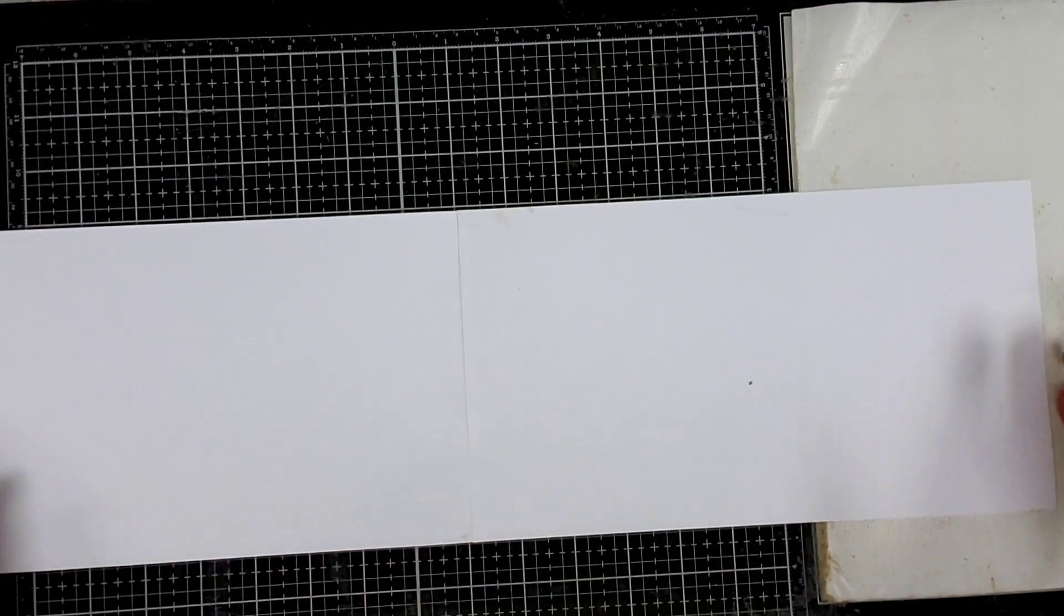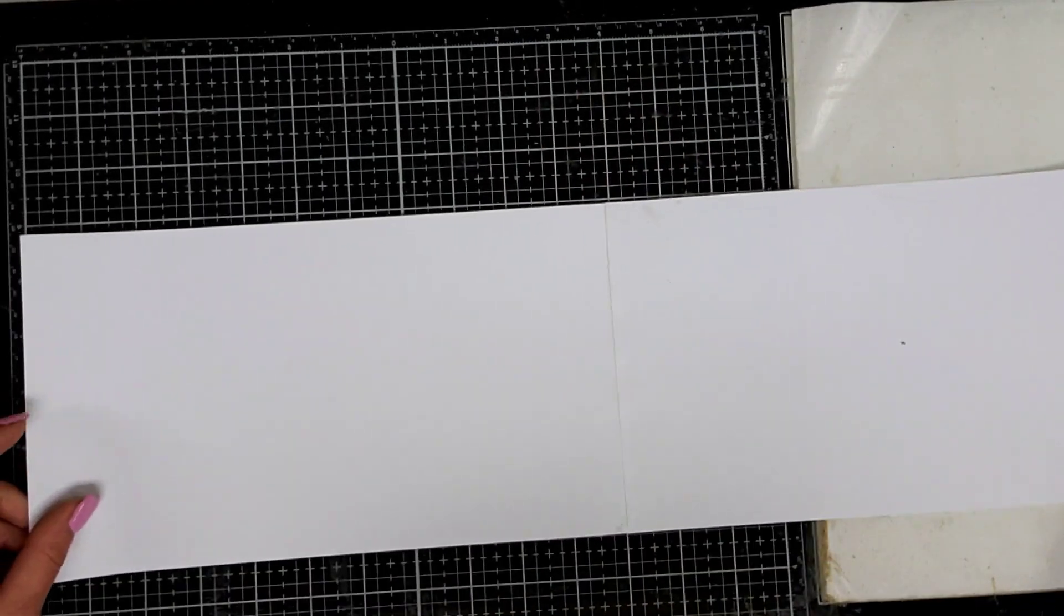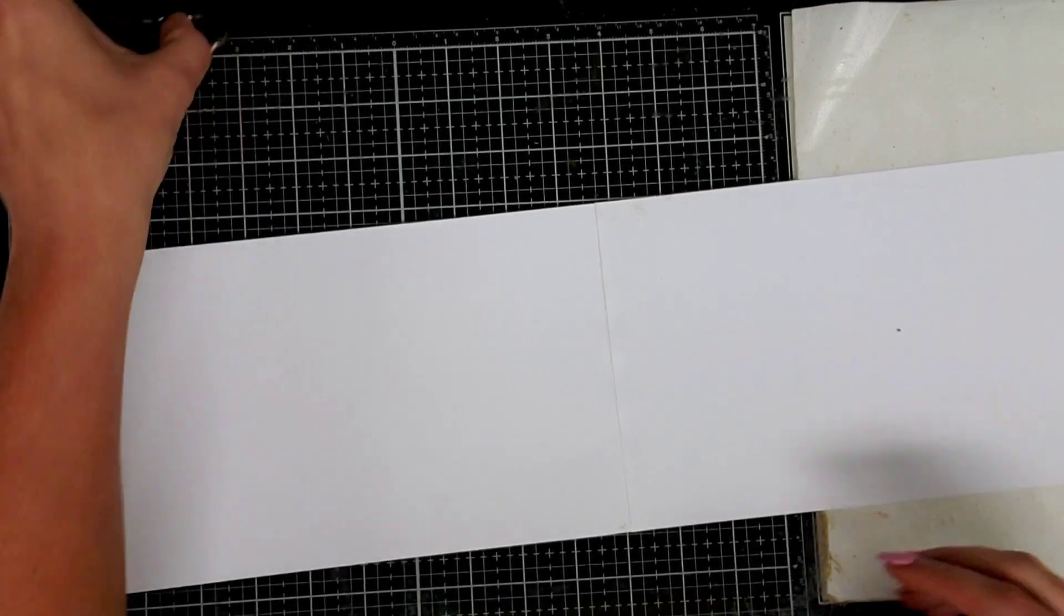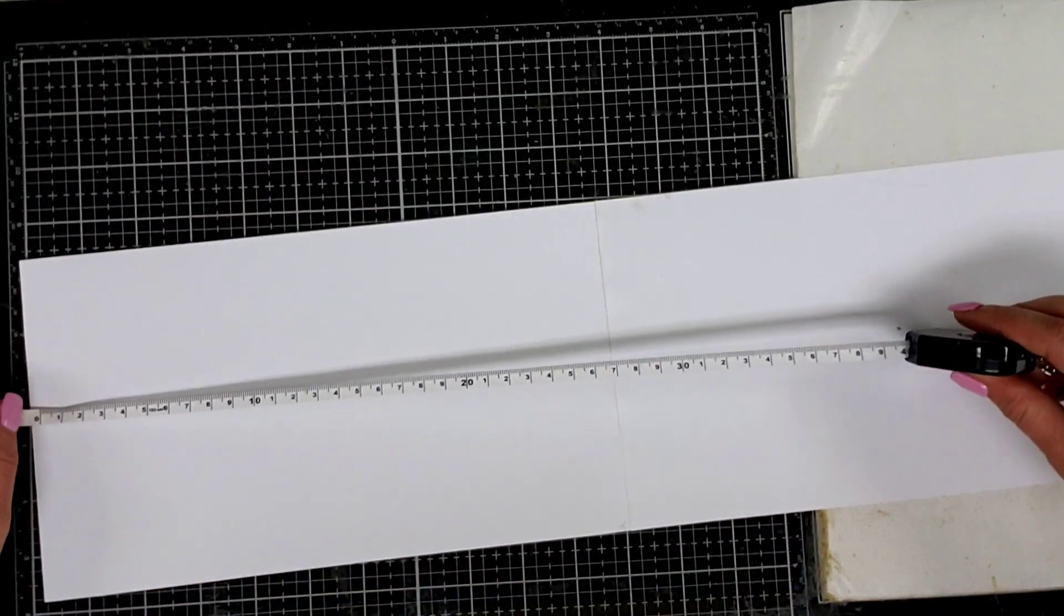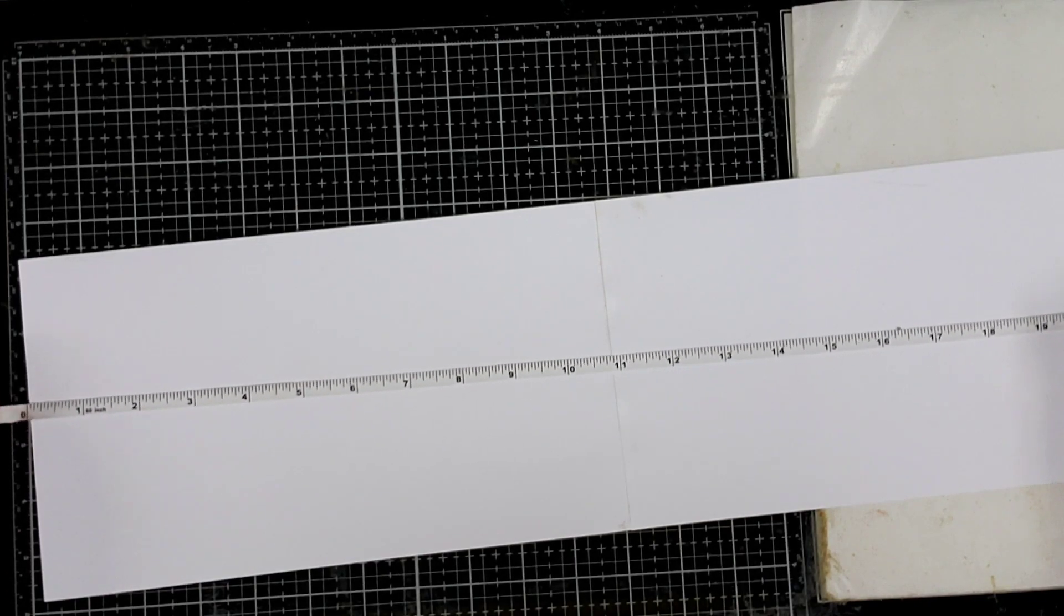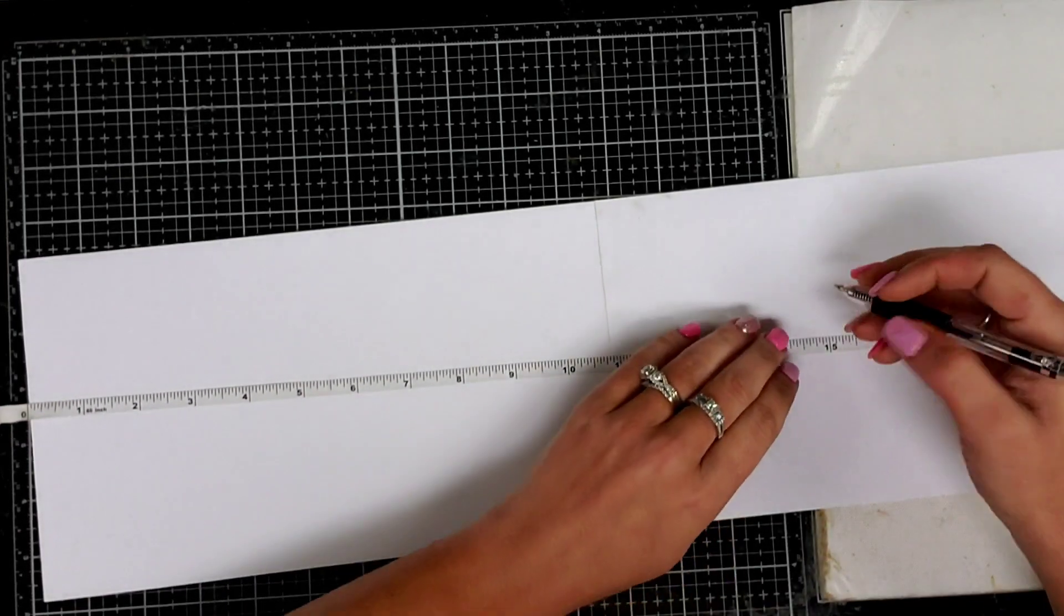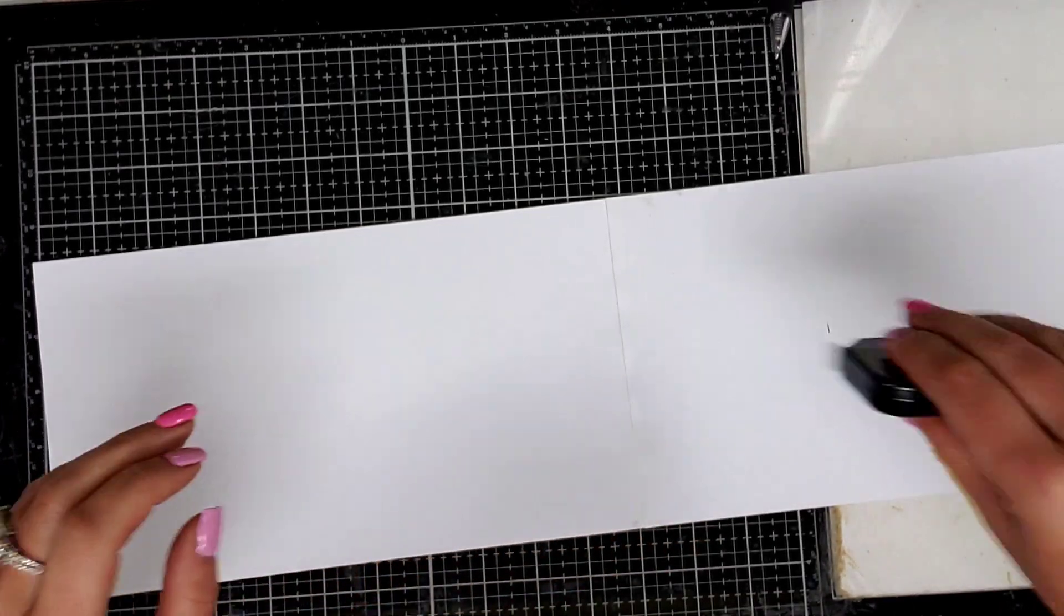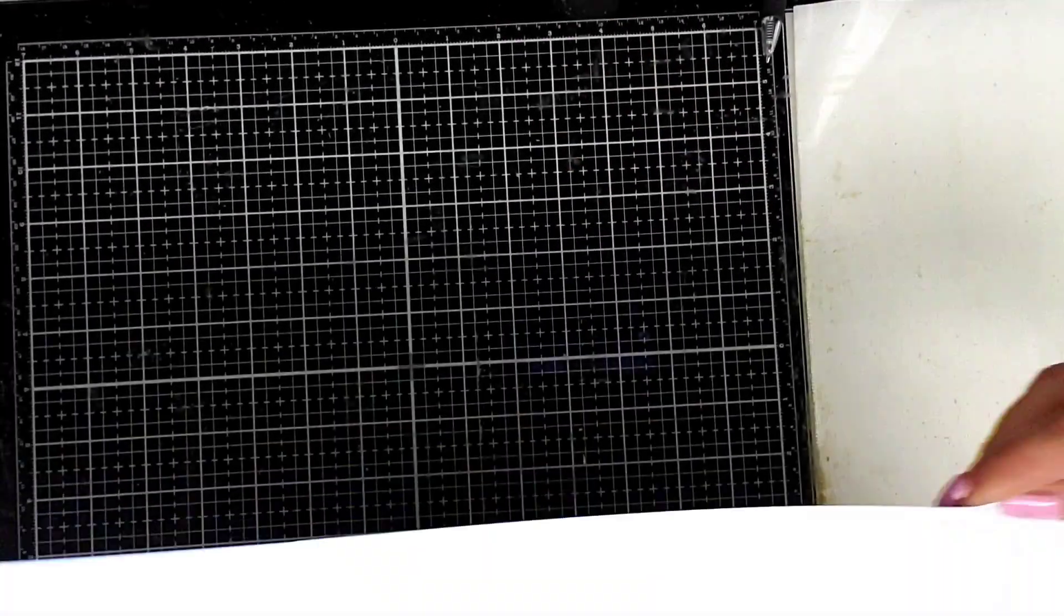Next what you're going to do - I know this looks super long and you're thinking what is she doing, but we're not keeping it this length. You're going to want to get out a longer measuring tape and go to 14 and 3/4 inches, and that's where we're going to cut it. So 14 and 3/4 inches, and we're going to cut that off.